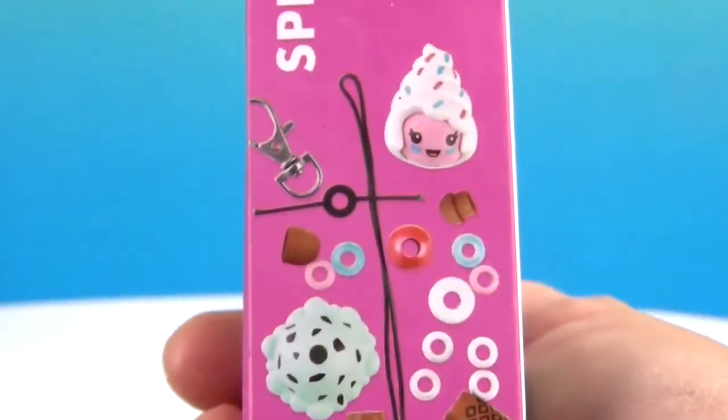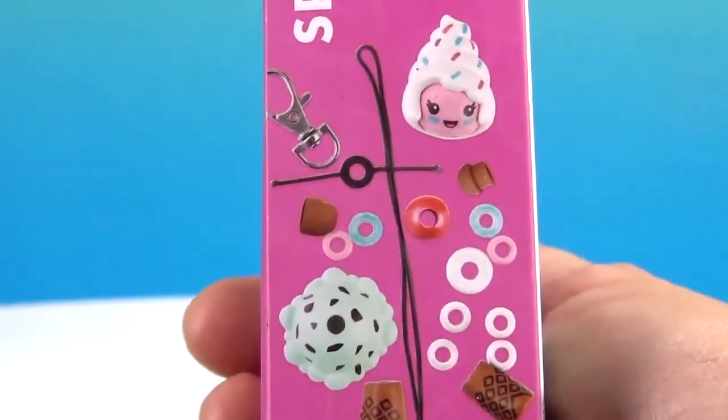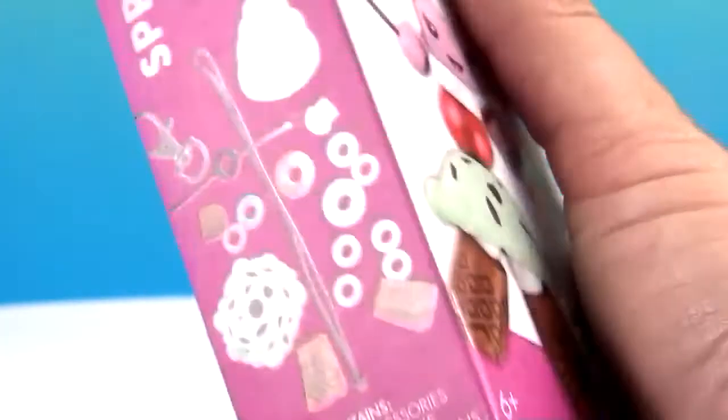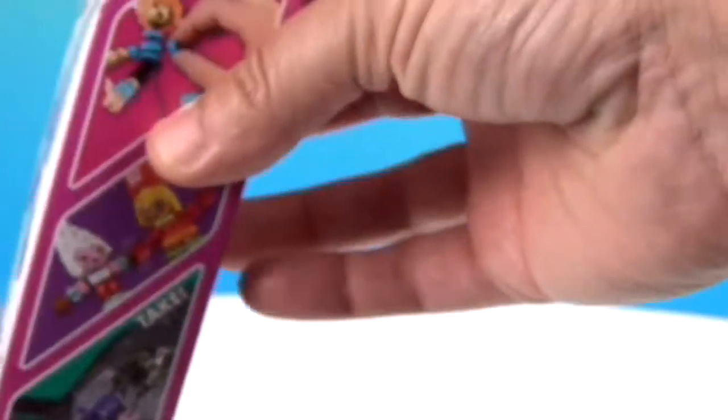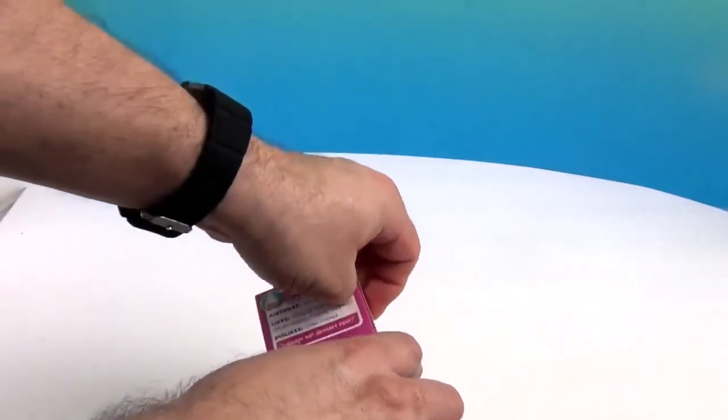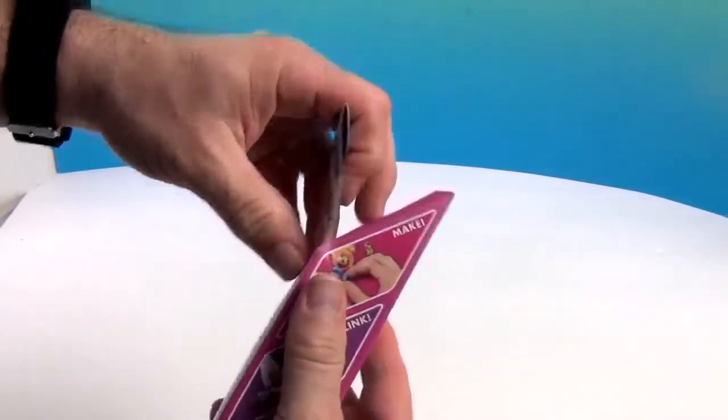So here's all, it has 24 pieces inside. It shows you here's the 24 pieces you get. And it looks like there's a little string and the clasp. So I guess go ahead and open it up so we can show the pieces inside. And then we'll come back and show you how it's done.